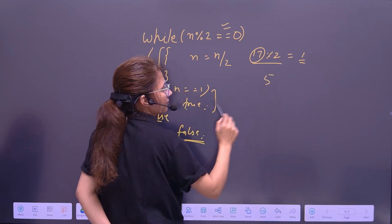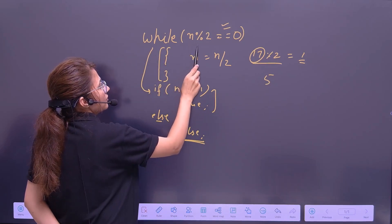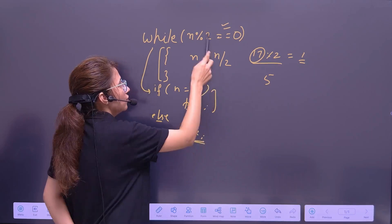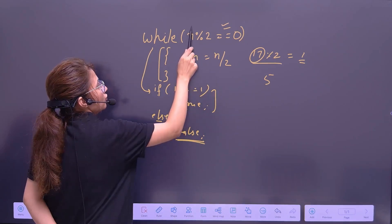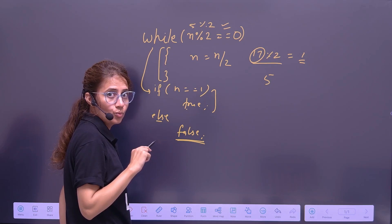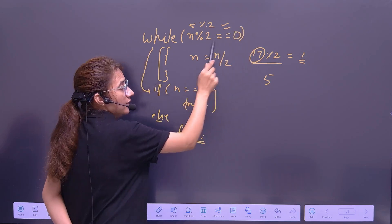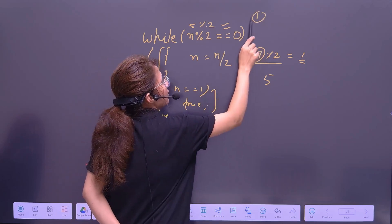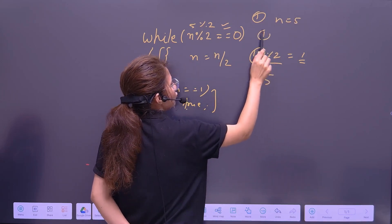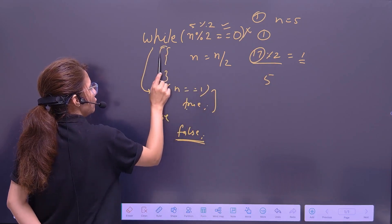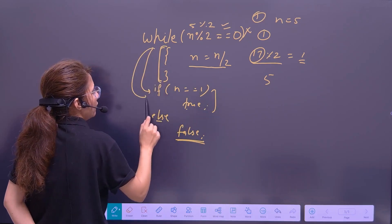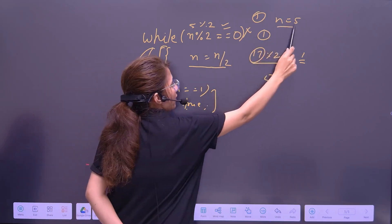Suppose number is 5. This is not a negative number and it's not 1, so it falls into the else category. 5 mod 2 — does it have remainder 0? No, remainder is 1. So this condition is not true, we will not divide. Directly we check: is n equal to 1? No, because n is still 5. So it returns false.